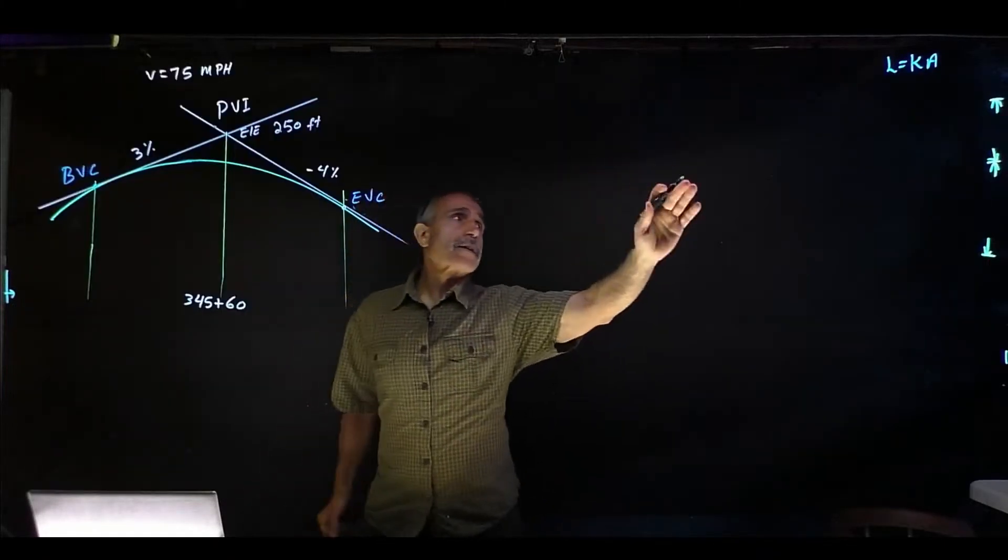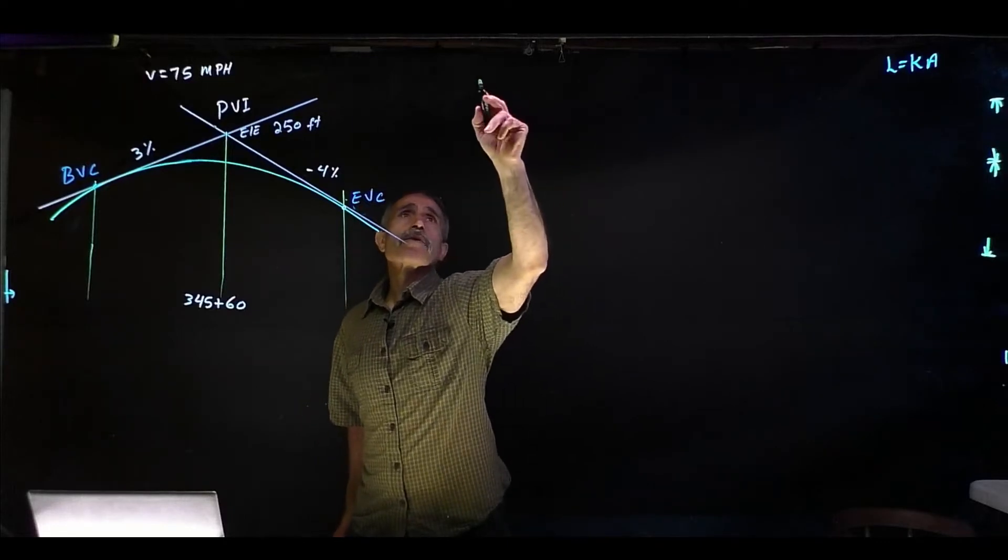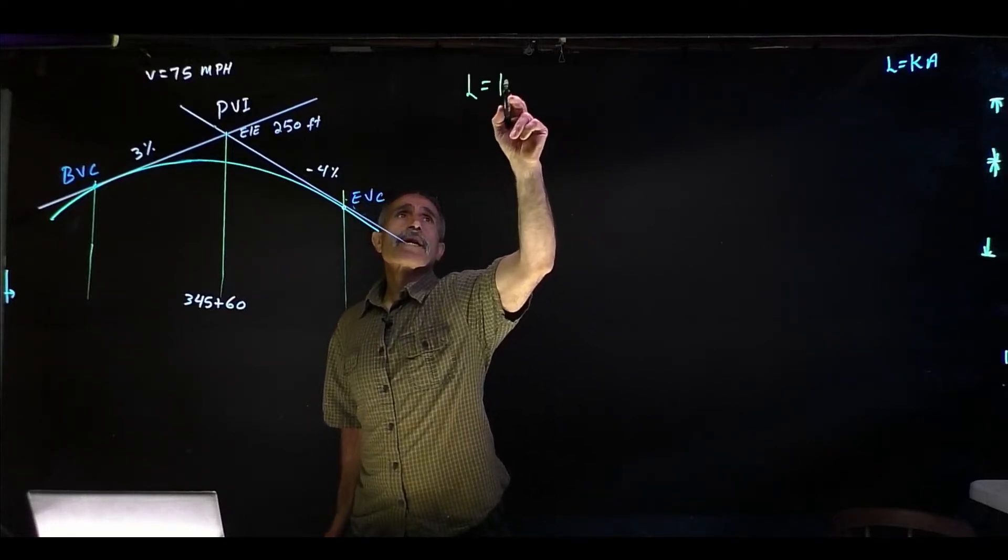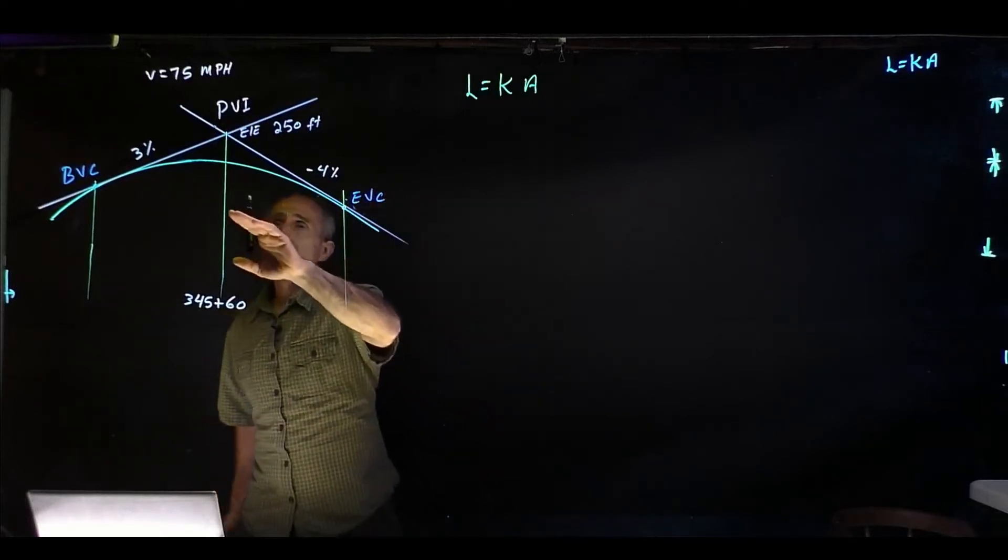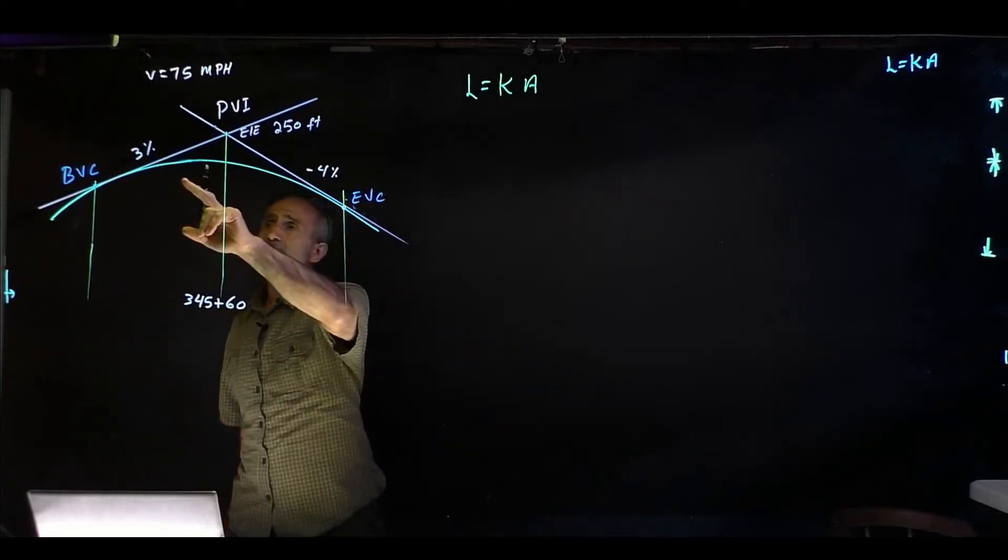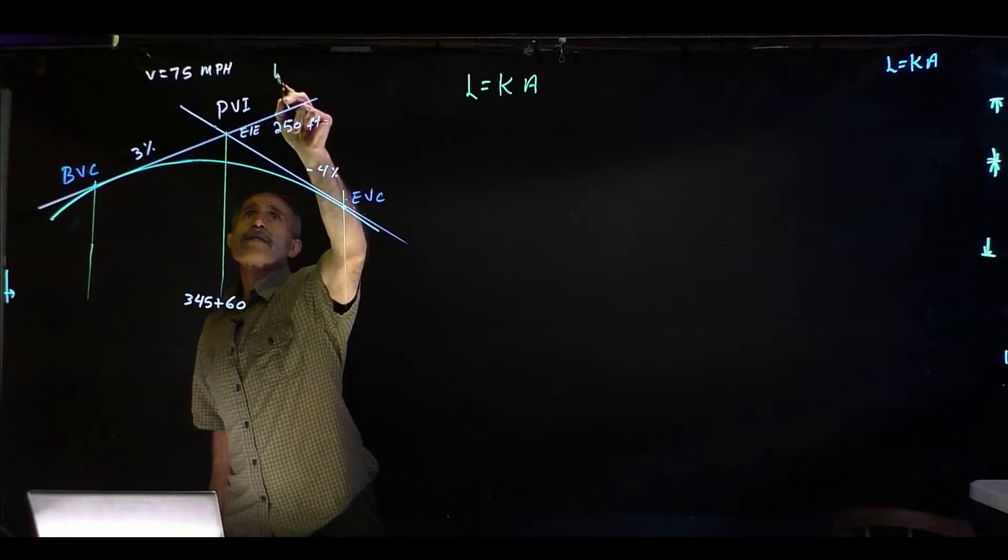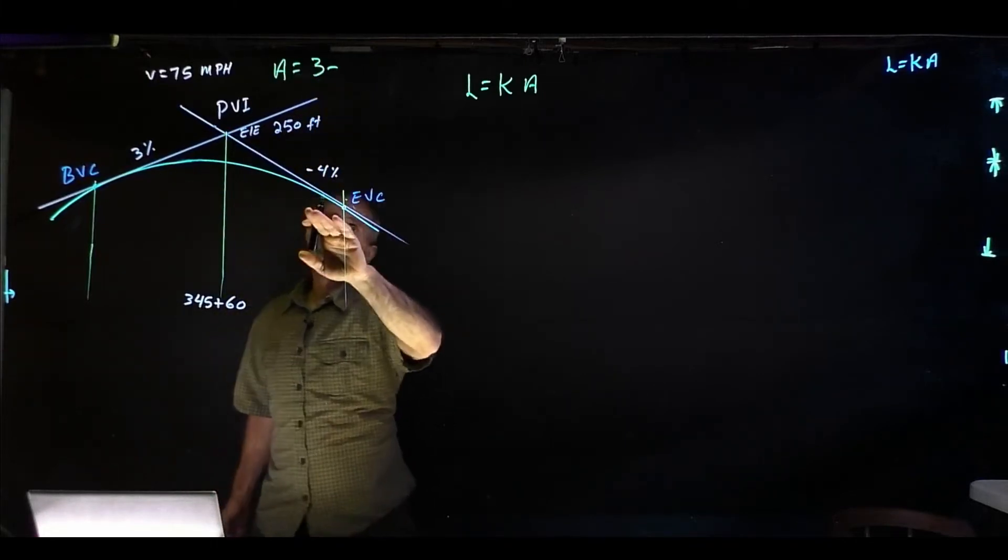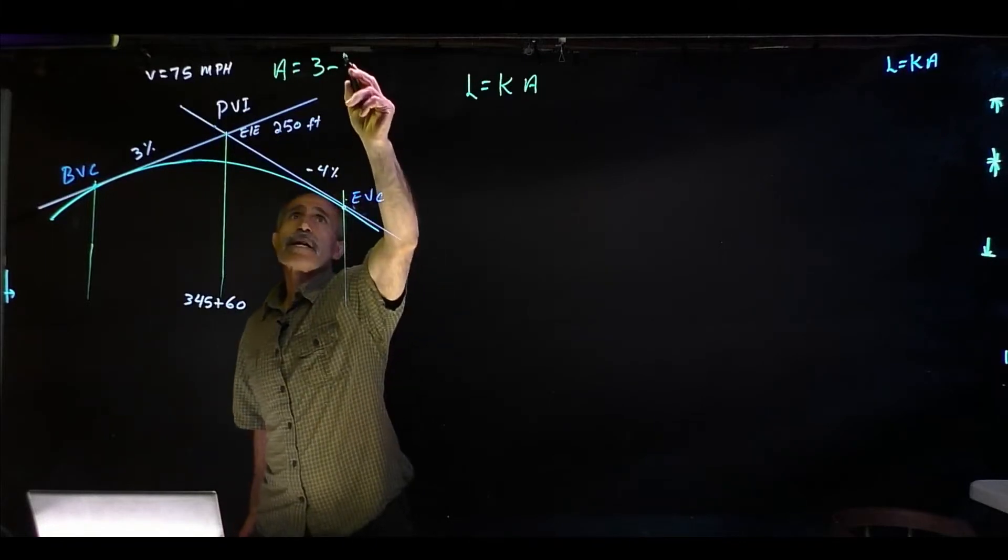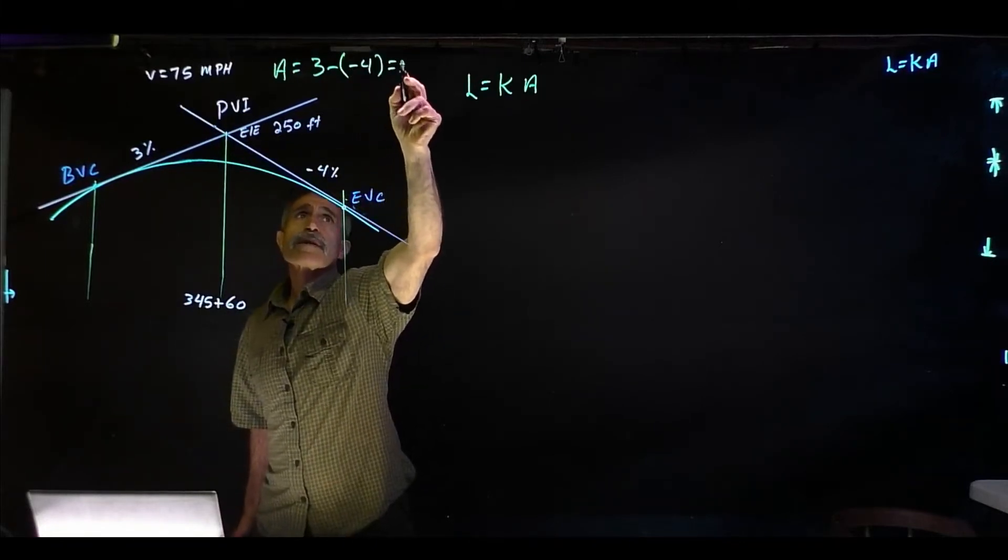We're going to calculate L based on AASHTO's equation: L equals k times A. Now A is the algebraic difference between the two grades. So A equals 3% minus negative 4%.